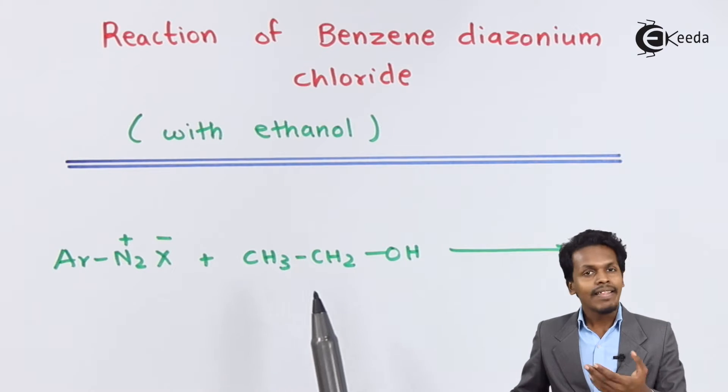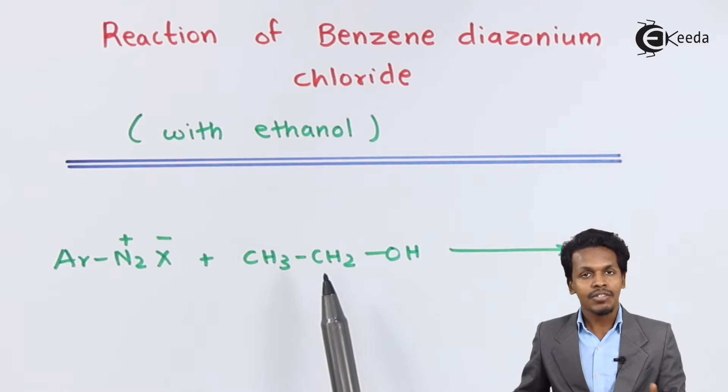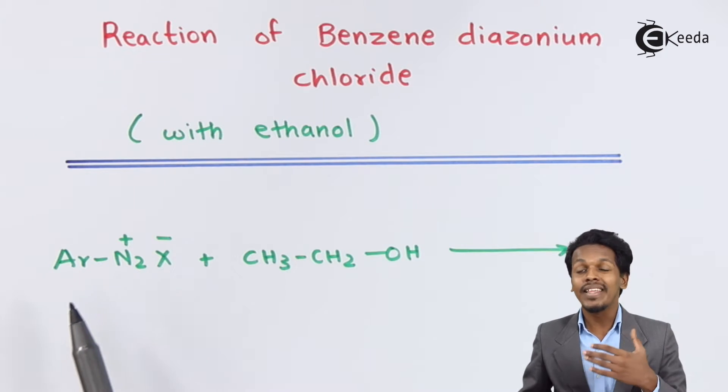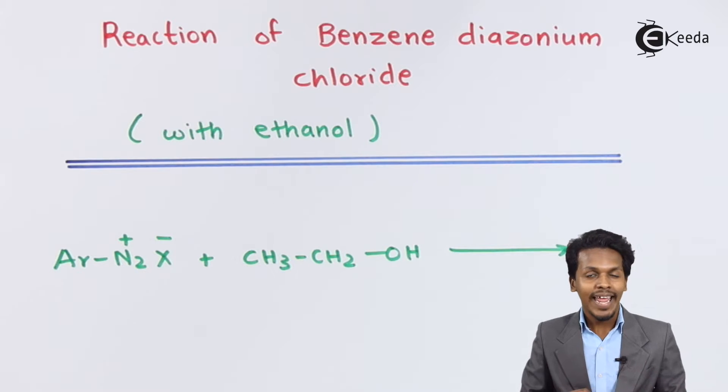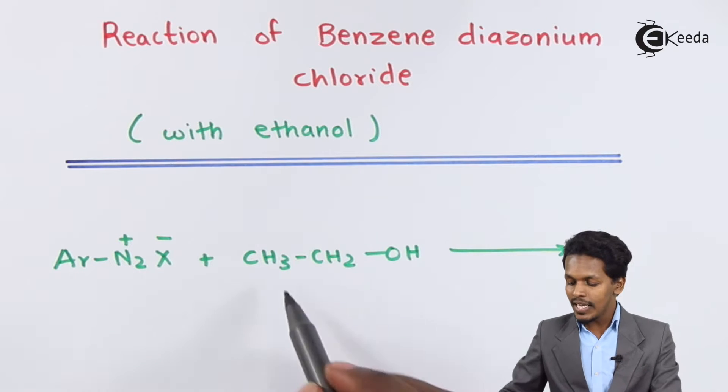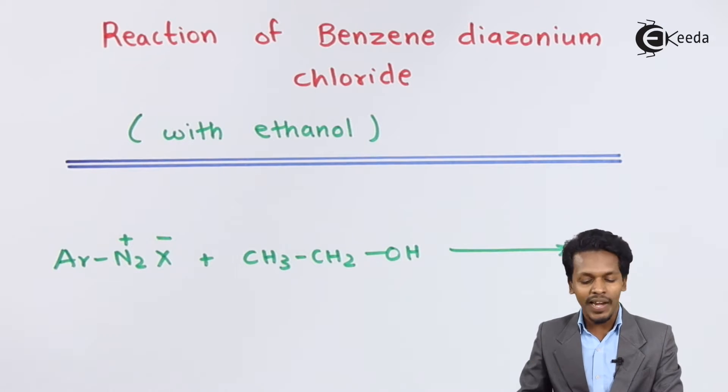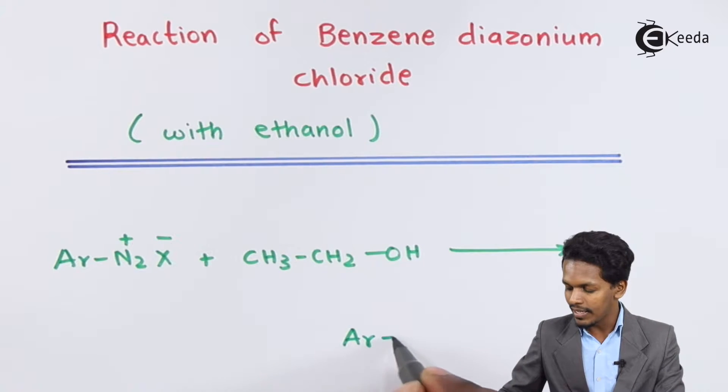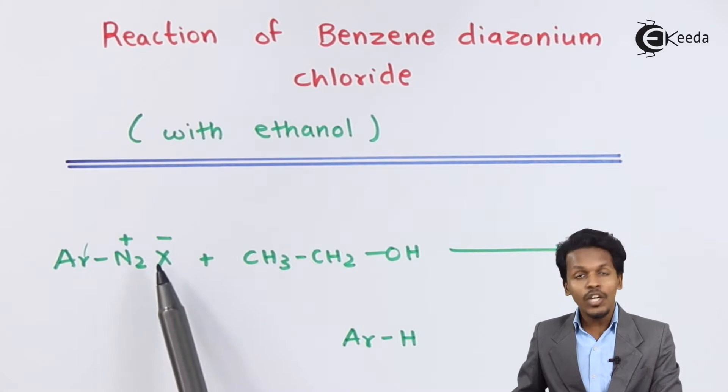In this reaction, the alcohol will oxidize to aldehyde and the aryl diazonium chloride will be reduced to a particular compound. The reaction will proceed such that the product we get is an arine, ArH, where the N2X is replaced by a hydrogen atom.